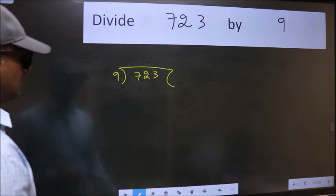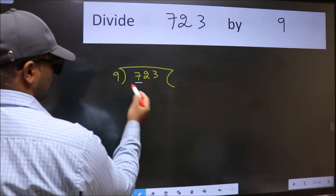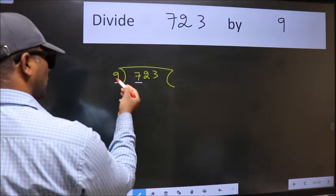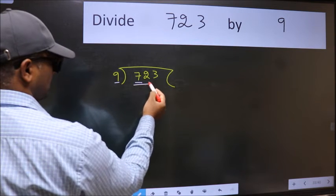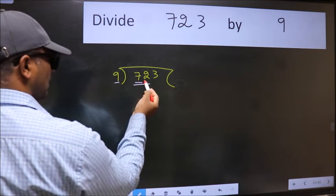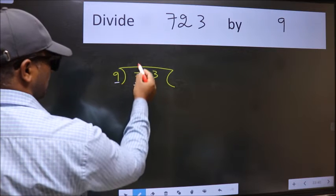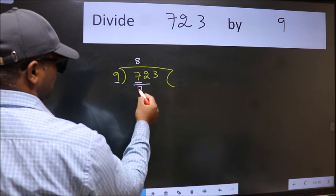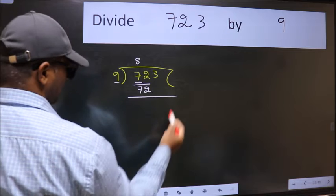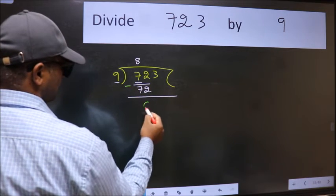Next. Here we have 7, and here 9. 7 is smaller than 9, so take two numbers, 72. When do we get 72 in 9 table? 9 eights, 72. Now we should subtract. We get 0.